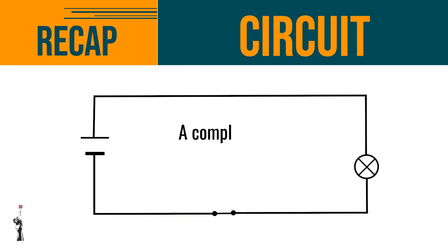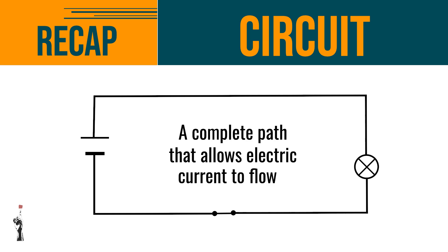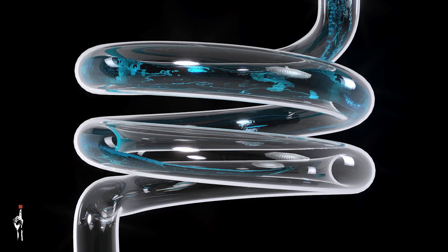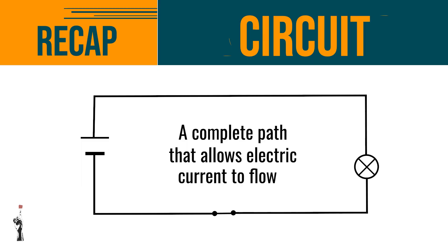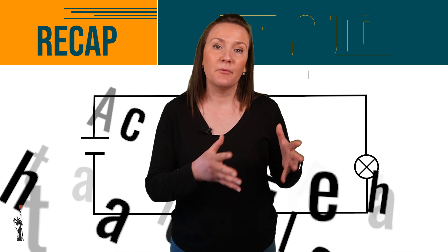Before we dive into the content let's remember a couple of things. A circuit is a complete path that allows electric current to flow. Just like water needs a pipe to flow, electricity needs a circuit. Can you remember some of the following keywords? Let's look at them together.